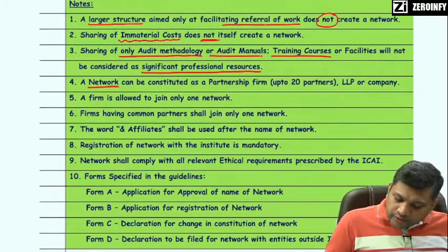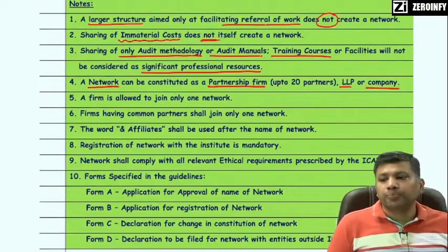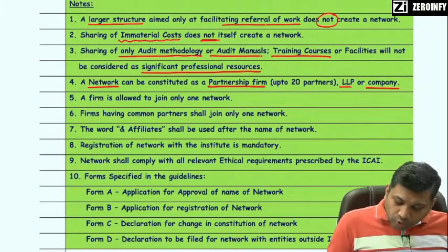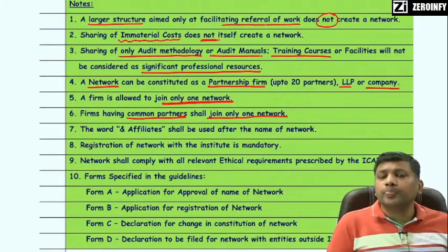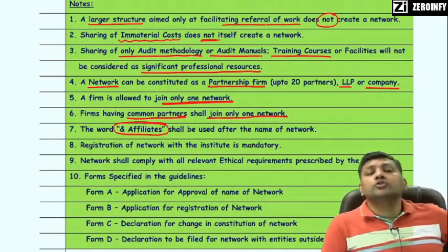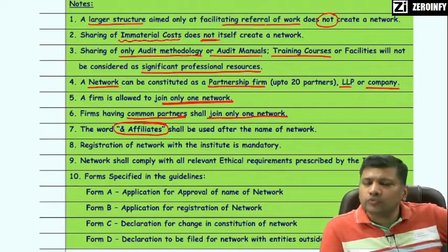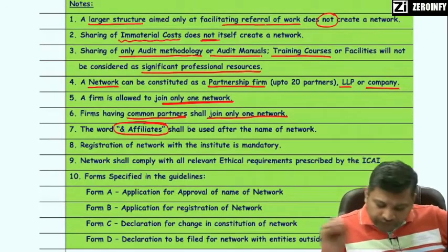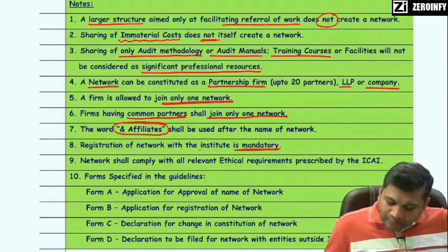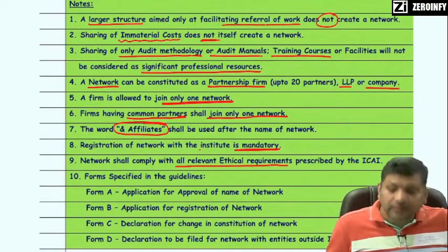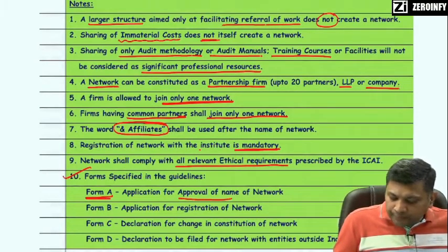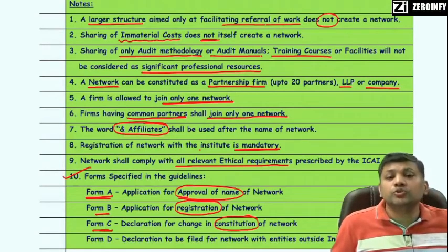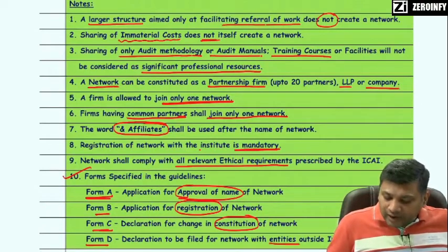A network can be constituted either as a partnership firm, LLP, or company. A firm is allowed to join only one network. Firms having common partners shall join only one network. The network should use the word 'and affiliates' along with its name so as to differentiate the network from the practicing CA firms. Registration of the network with the institute is mandatory. The network shall comply with all relevant ethical requirements prescribed by ICAI. Forms: Form A — application for approval of name of network; Form B — application for registration of network; Form C — declaration for change in constitution of network; Form D — declaration to be filed for network with entities outside India.